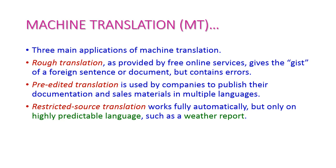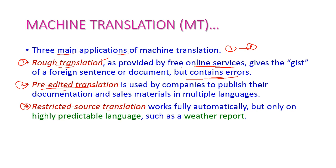The applications of machine translation — let us see three main applications. The first one is rough translation, the second one is pre-edited translation, and the third one is restricted source translation. Rough translation means translations using free online services. Some free service providers will translate one language content to another language content, but this contains errors. So this is called rough translation.